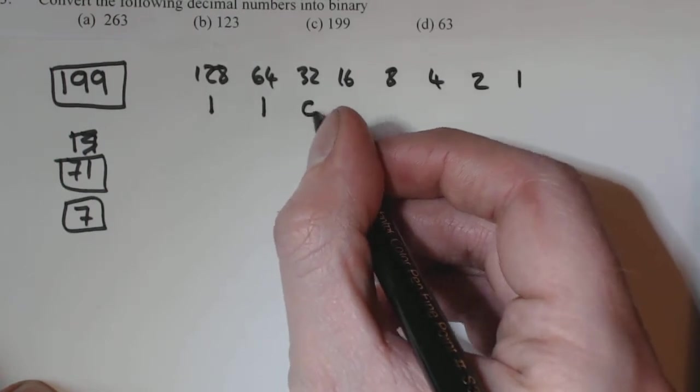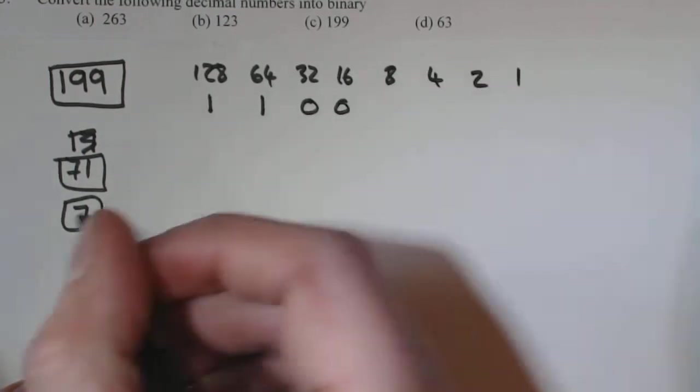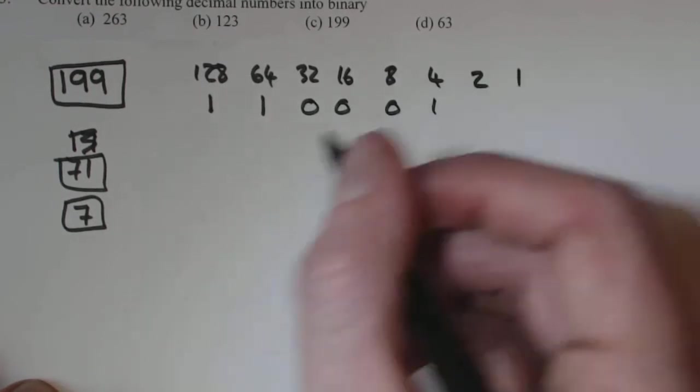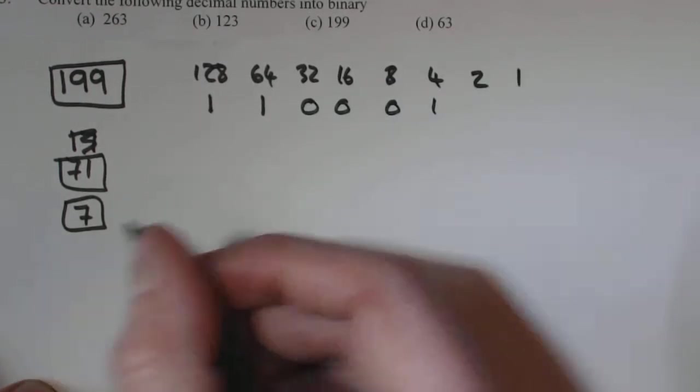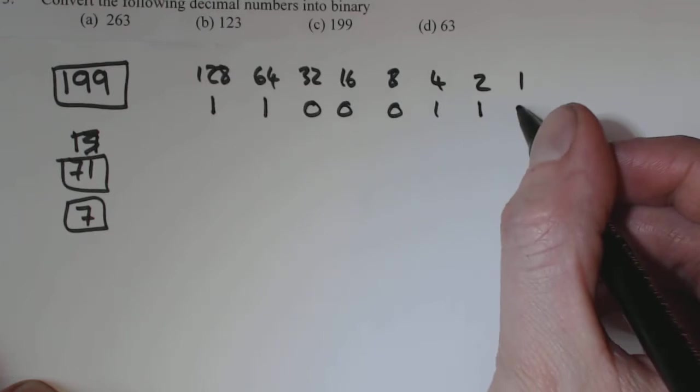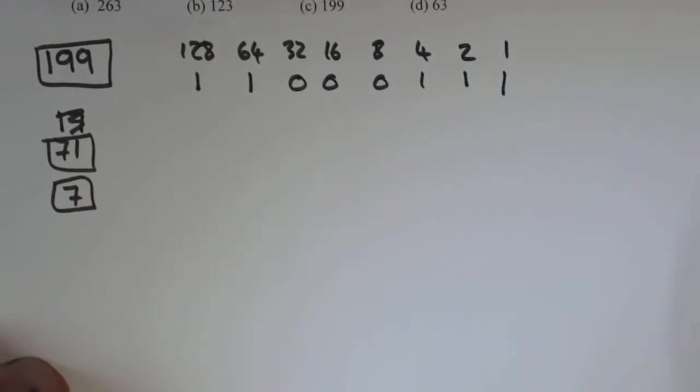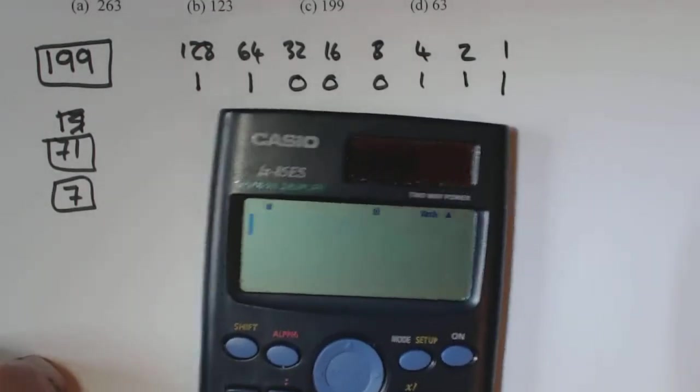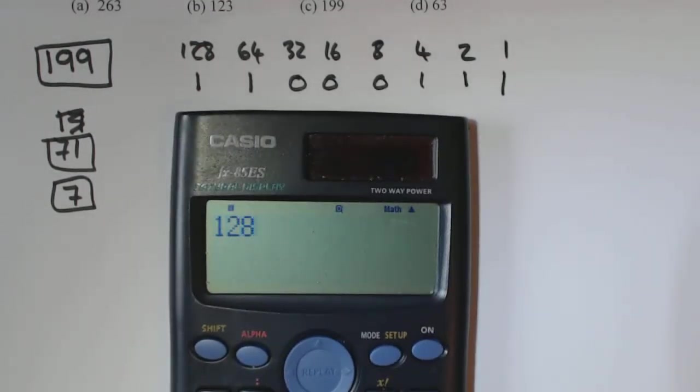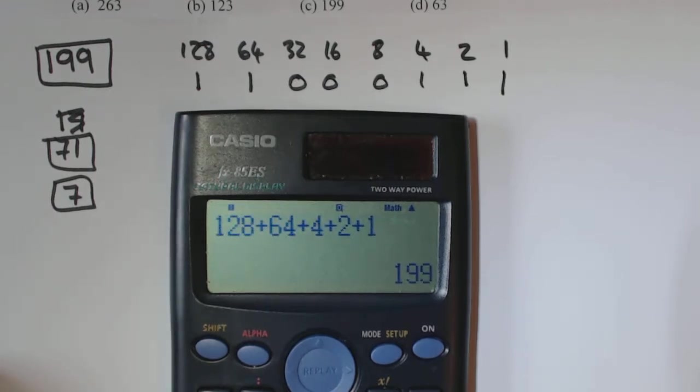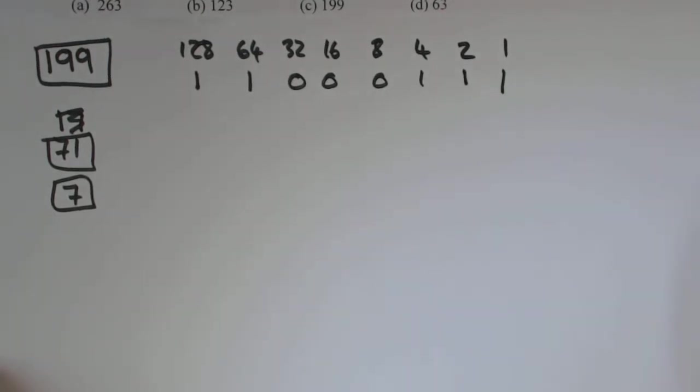But 4 does. Then got a 2 and a 1. So 4, 2 and a 1 gives you your 7. If you add these up, again, just double check. It's always safer than sorry. That is 199. So that's your answer for 199.